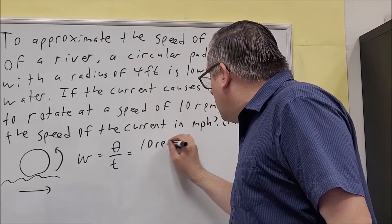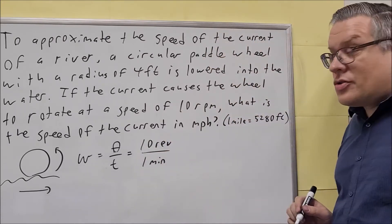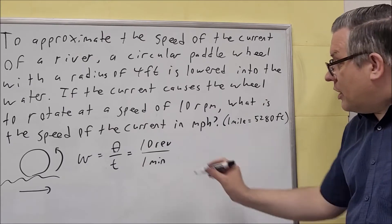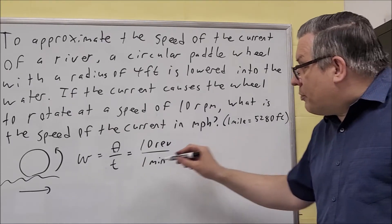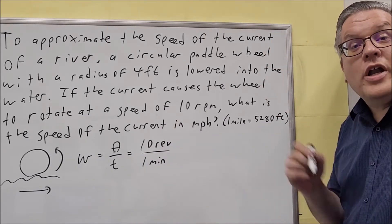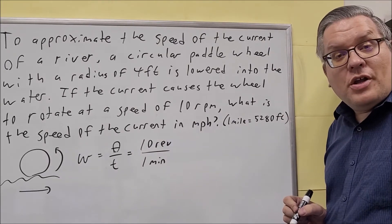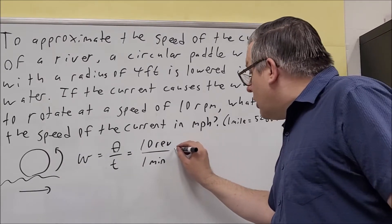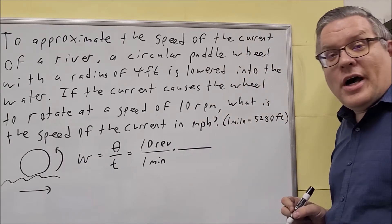We're going to do 10 revolutions per minute. So RPMs, revolutions per minute, that's where the time we can put on the bottom. Now typically when you do Omega, Omega is measured in radians. So we're going to change this to radians per minute. In order to do that we have to use a conversion on that that we're going to multiply this by.